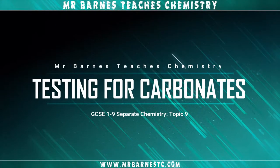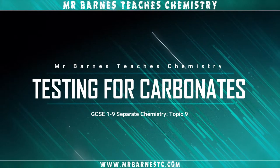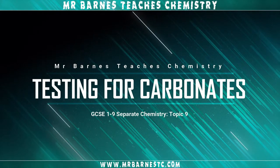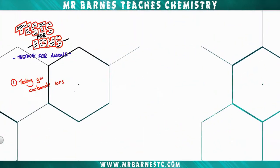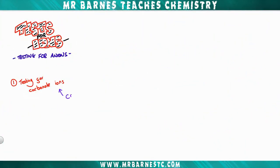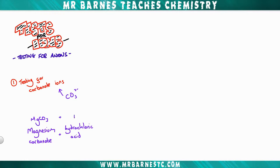If we start off with the test for carbonates, which are our CO₃²⁻ ions, the first thing you need to do is take whatever your solution is and add an acid to it. So I'm going to take magnesium carbonate and add hydrochloric acid to it.